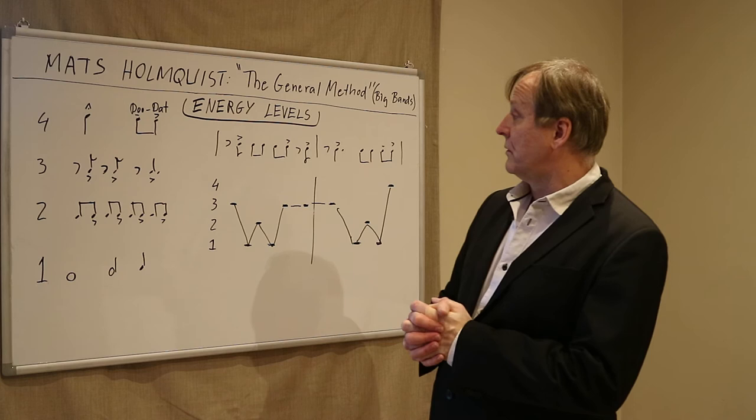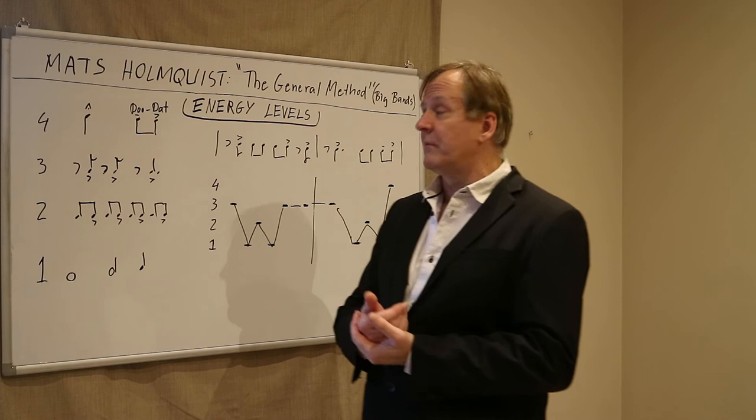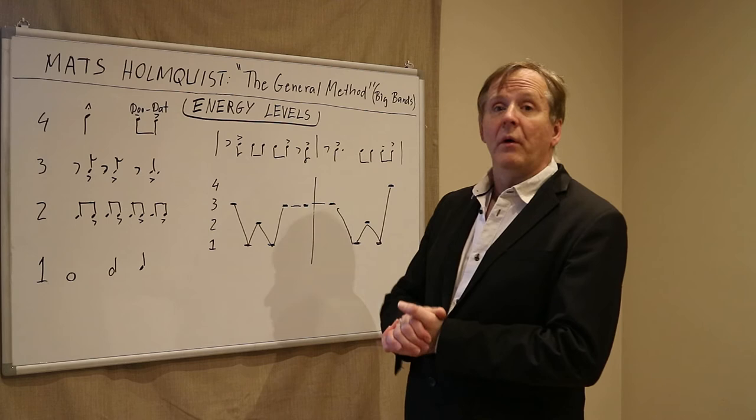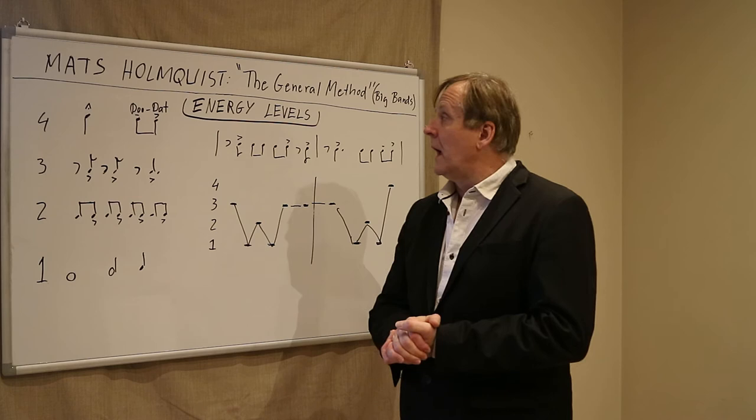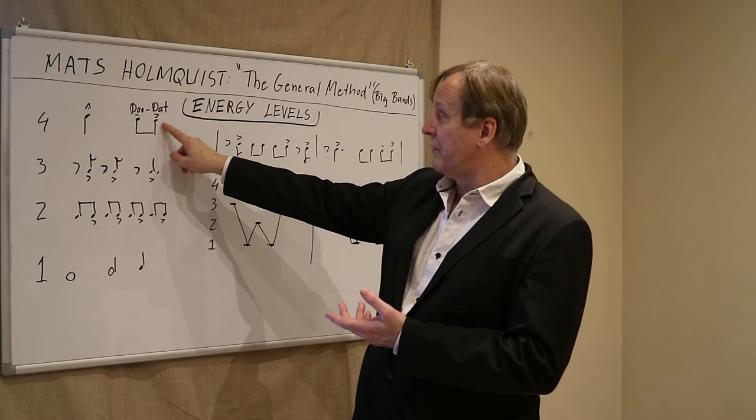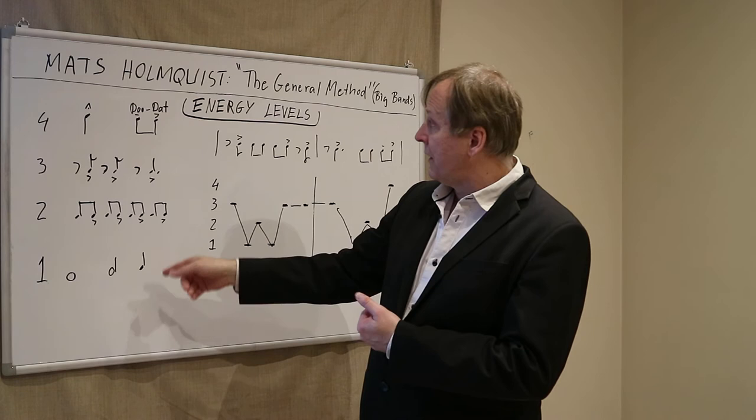Very common big band phrasing. And the very highest level is level four, and these are what I call rooftop accents on downbeats, also extremely common in big band jazz and phrase endings. The last note here has level four. This one actually has level one, an unemphasized downbeat.